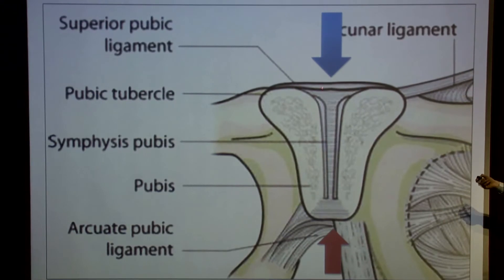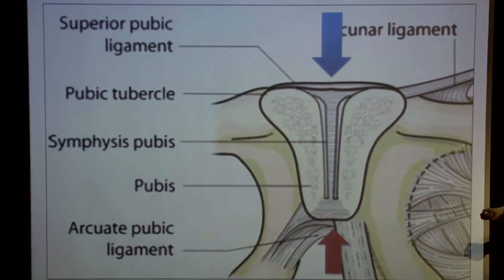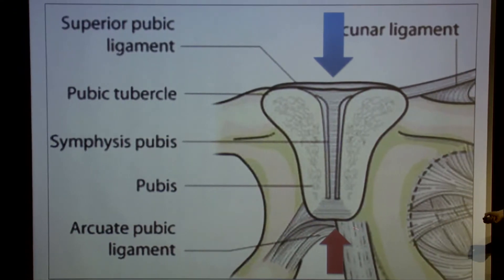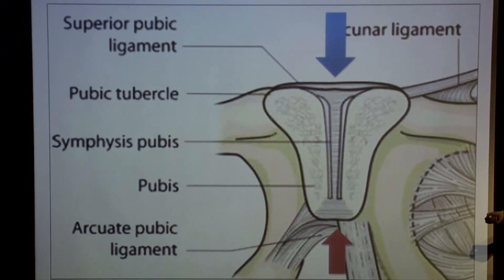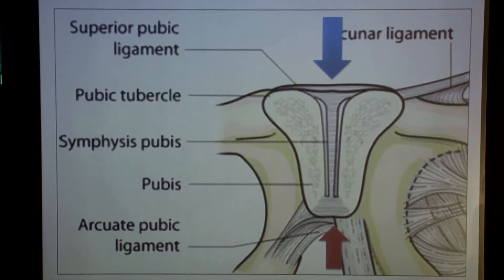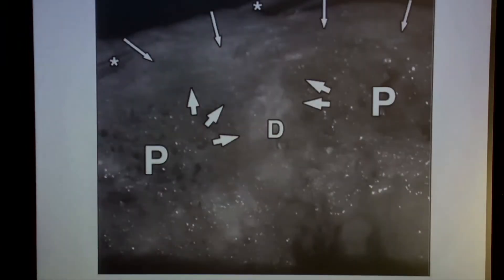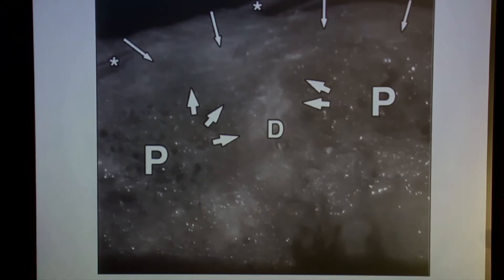The capsule thickened superiorly forms the superior pubic ligament, and inferiorly it's called the arcuate or inferior pubic ligament, which is much thicker than its superior counterpart. A nice paper by Robinson dissected some fresh cadaveric specimens to examine this further.